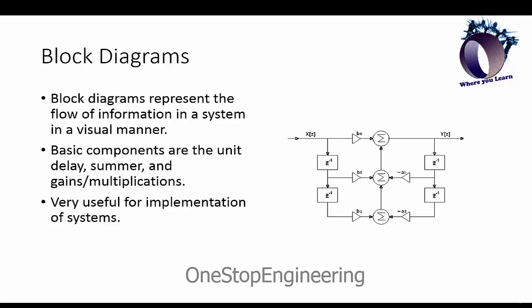Our next method of representing a system is going to be the block diagram. Block diagrams represent the flow of information in a system in a visual manner and make it very easy for an engineer or designer to get a grasp of what is going on within the system. As you can see here in the figure, we have a couple of basic components within our block diagrams. We have a delay here, which we will see notated often as z^{-1}. I will talk about why that is later on in the course. You have a summation or summer block, and we have gains here where we're simply multiplying by a constant, and the directions—the arrows of course—show how the input goes through.